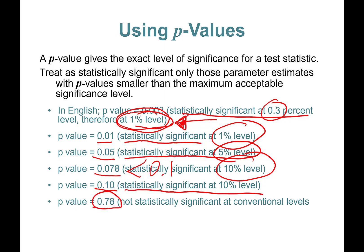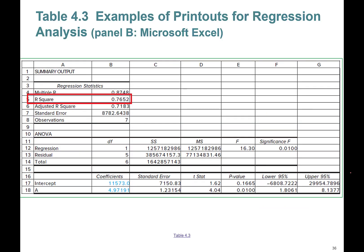A p-value of 0.78 means this is statistically significant at the 78% level, so we say it is not statistically significant at conventional levels. This is how we determine whether a coefficient is statistically significant by looking at its p-value.